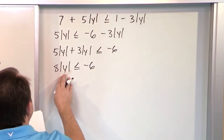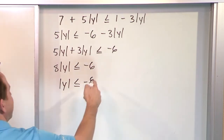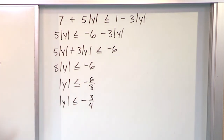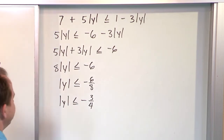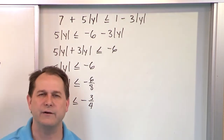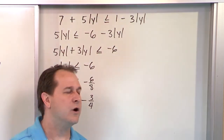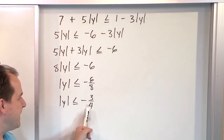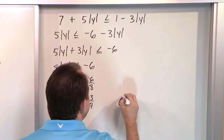I don't like the 8 out front, so divide by 8: absolute value of y less than or equal to negative 6 eighths. Simplifying by dividing by 2 gives absolute value of y less than or equal to negative 3 fourths. Now you start looking at it more deeply and realize — wait a minute. I have an absolute value on the left and I'm saying it has to be less than or equal to a negative number. But absolute values never give you negative numbers. No matter what I put in for y, I always get a positive number. It's impossible. So there is no solution.